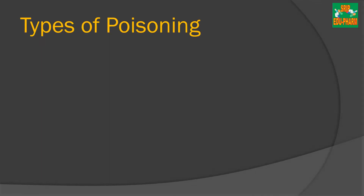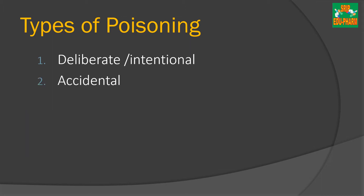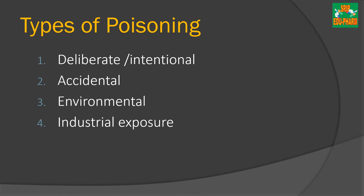Now, let us know the different types of poisoning. Poisoning is mainly classified into four types: first is deliberate or intentional poisoning; second is accidental poisoning; third is environmental poisoning; and fourth is poisoning caused due to industrial exposure.